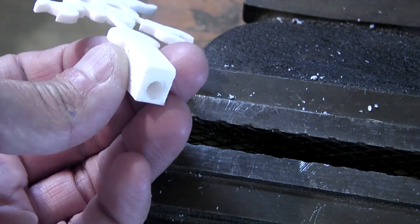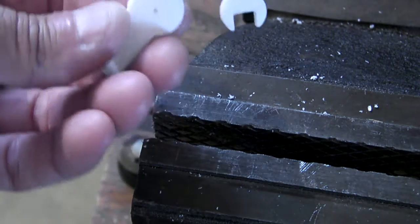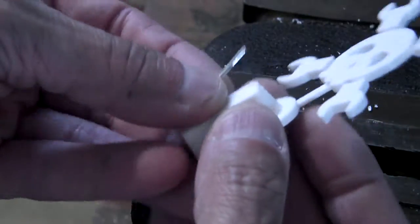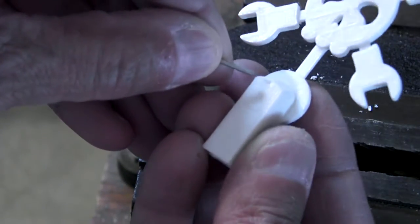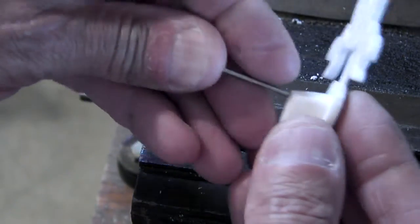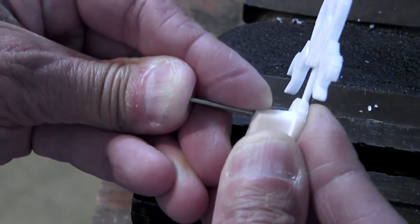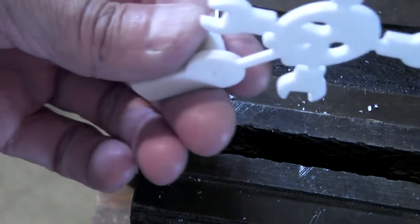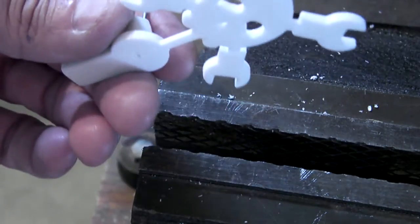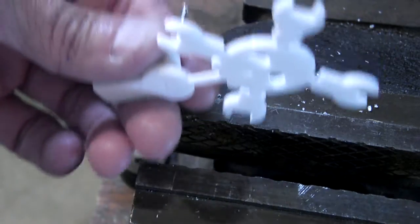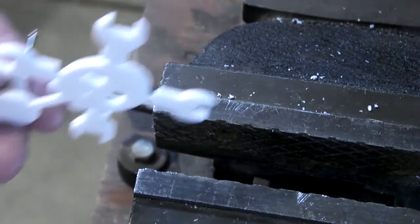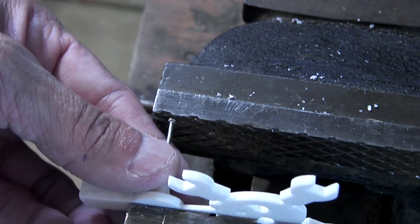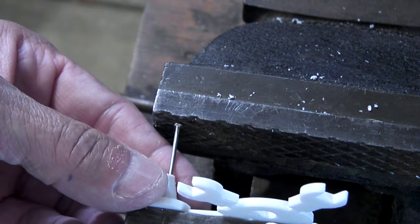Now that we have the hole in the bottom threaded, we can press in the nail. The hole is actually smaller than the nail, so I'll just get it started. And then I'm going to use the vise to press the nail in. I'm going to set it up and straighten it out.